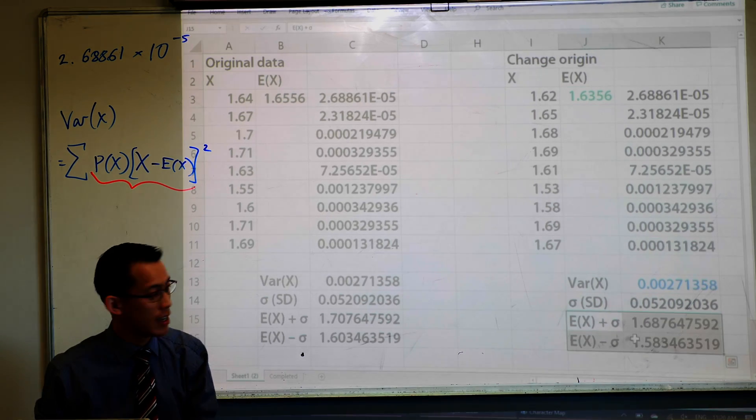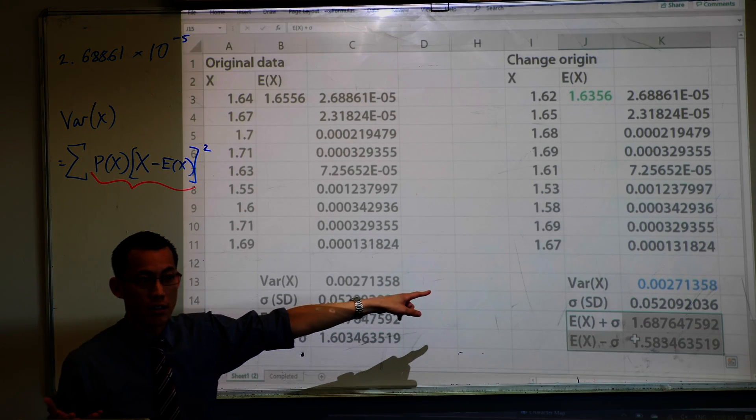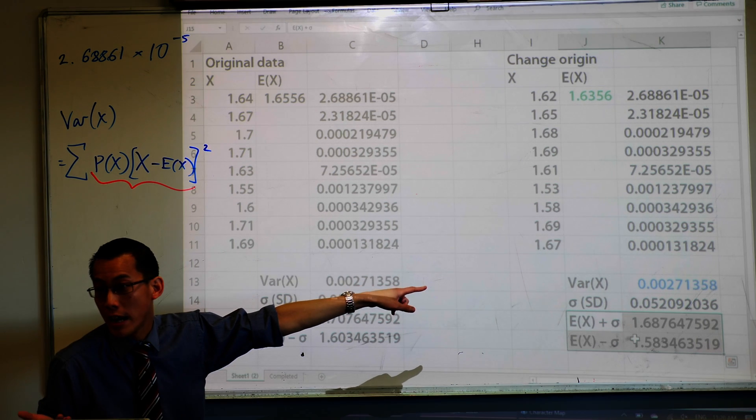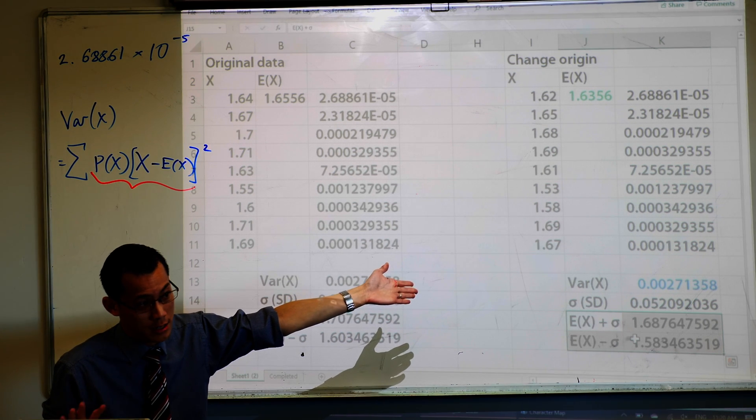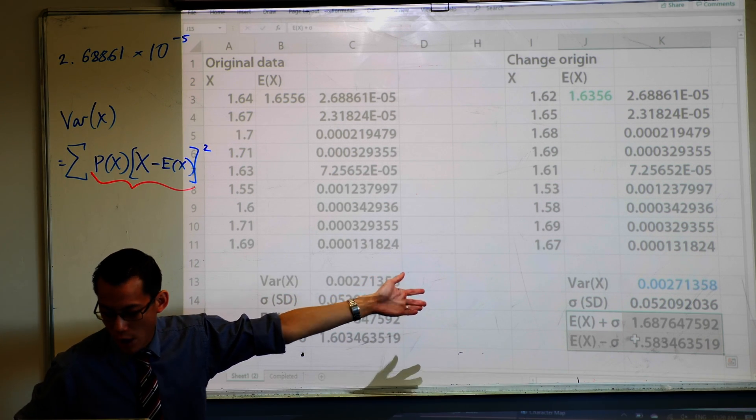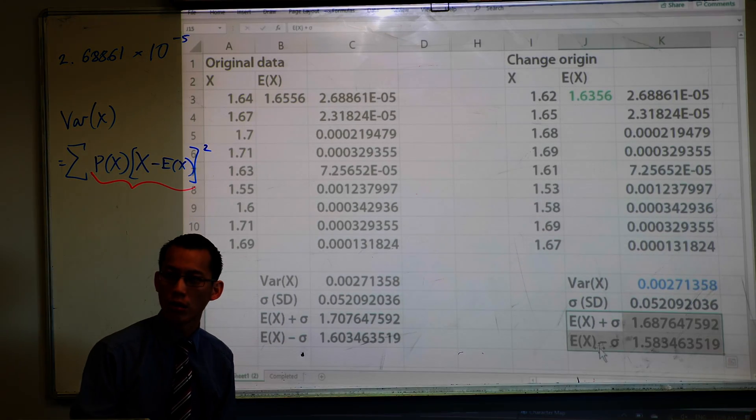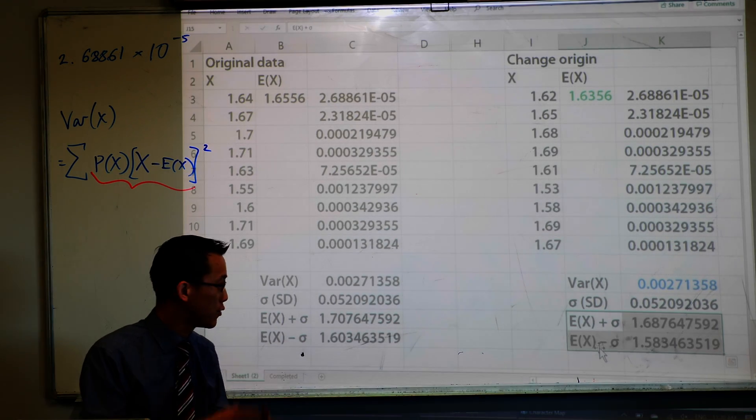So therefore these calculations down the bottom, they are dependent on the expected value. So if your expected value changed, then those guys will also change. Does that make sense? And hopefully you can see they're all two centimeters shorter than what they were before, right? You've shifted everything down.